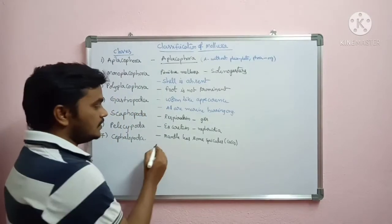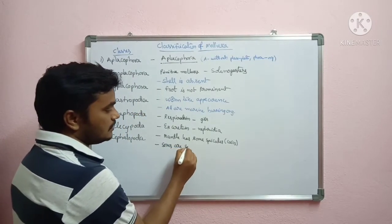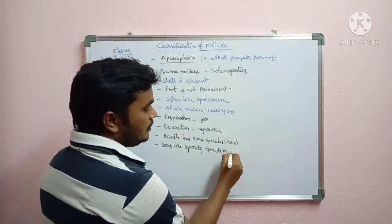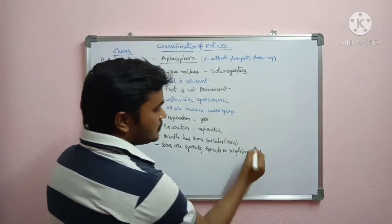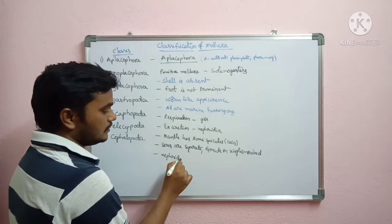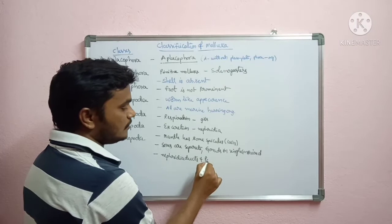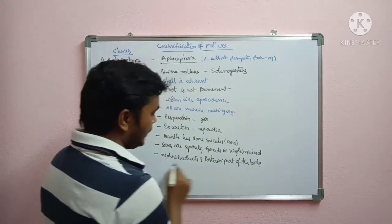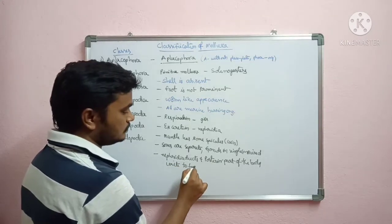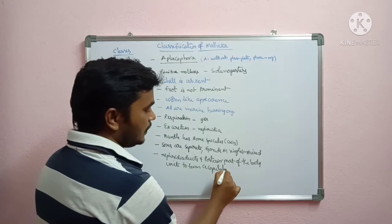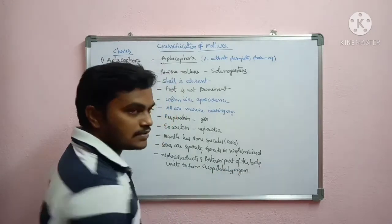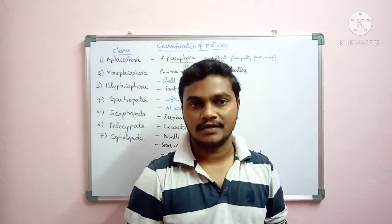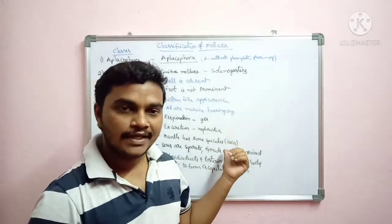Regarding sexuality, sexes are separate in Aplacophora. Both male and female are separate; gonads are single or paired. In some cases, nephridial ducts in the posterior part of the body unite to form a copulatory organ in some Aplacophora.